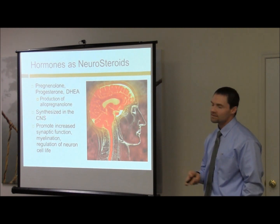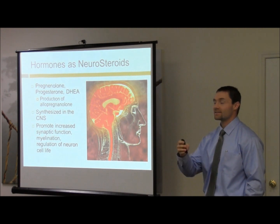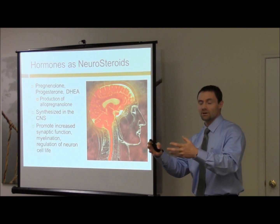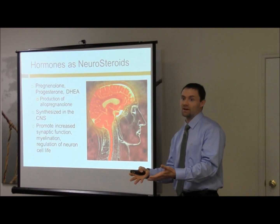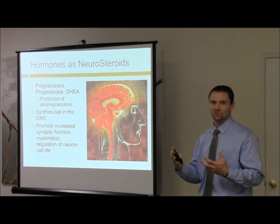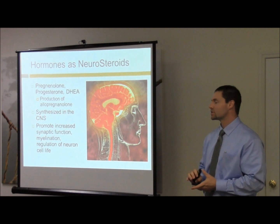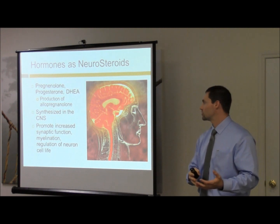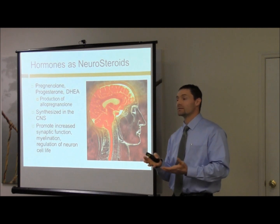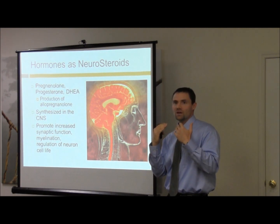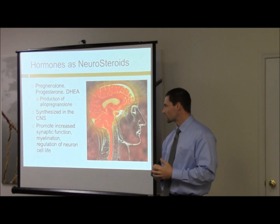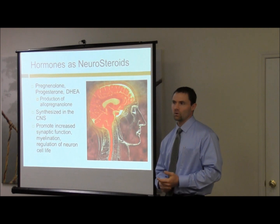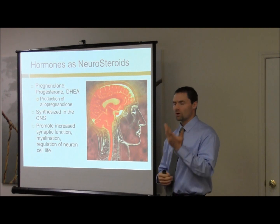Here's something else that's pretty interesting: these neurosteroids are actually synthesized in the central nervous system — not necessarily in the adrenal glands, testes, or ovaries, but actually at the site of function, where they're going to be used. That's a whole different mindset from what we've traditionally thought about hormones. And there's a huge contribution from the inflammatory process — one of the main things associated with inflammation is decreased neurological function. If patients report memory issues or decreased motivation, those are indications of neurodegeneration.